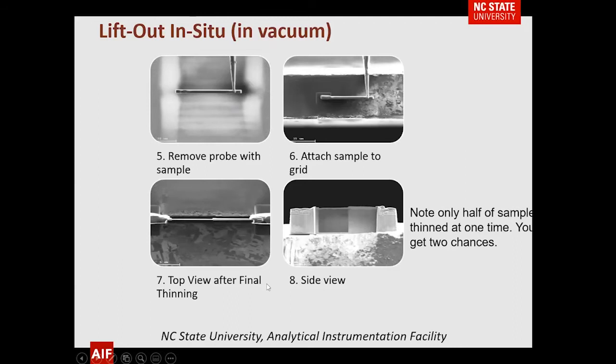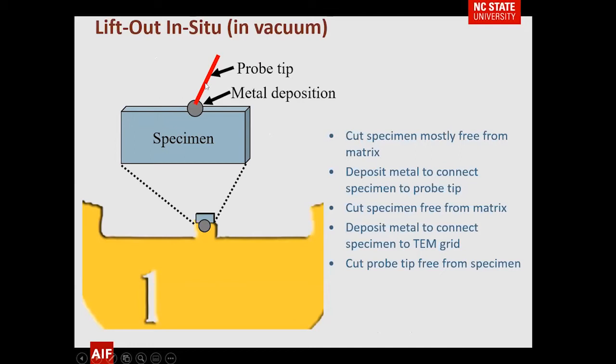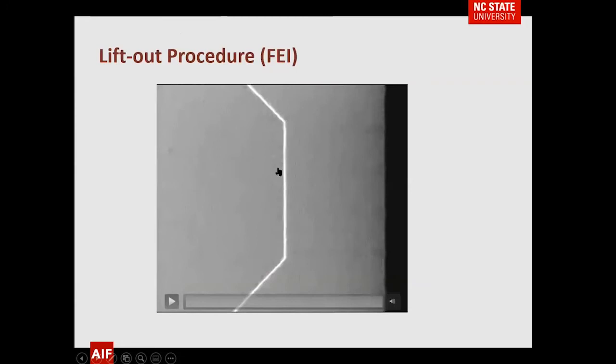This is a cartoon to help you understand what's going on. The probe tip from the micromanipulator is attached with metal deposition, moved down to the grid, and attached. Then we cut the probe free, remove it, and do the final thinning. Now let's show you this whole process — not in real time.